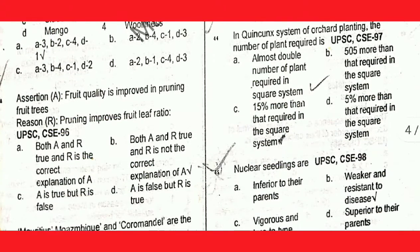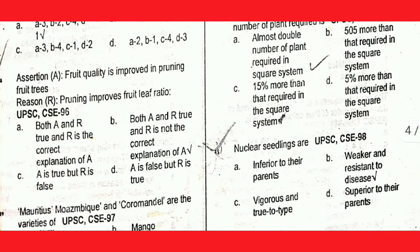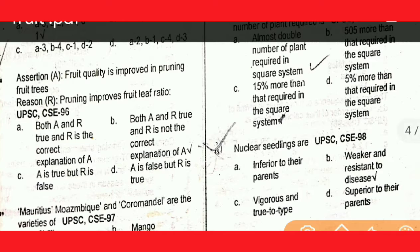Next question: fruit qualities are improved by pruning fruit trees. Pruning improves the fruit-to-leaf ratio. Option B is correct.